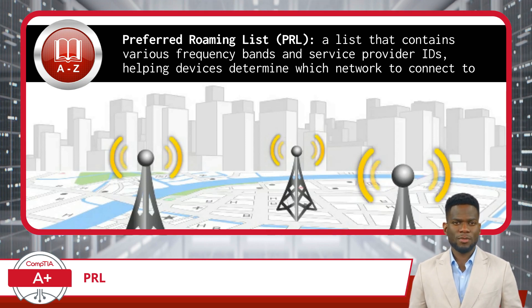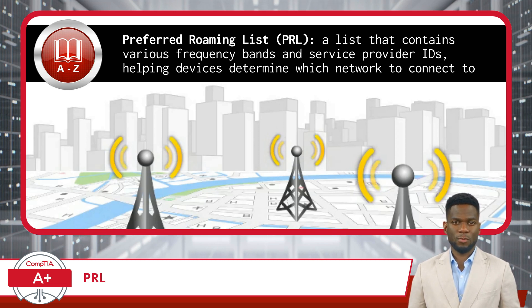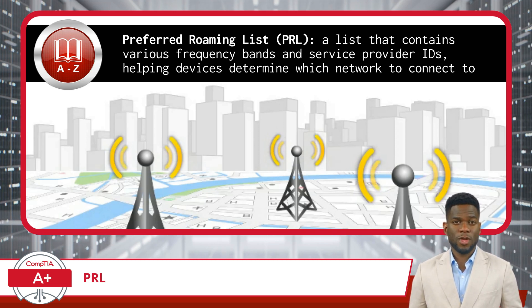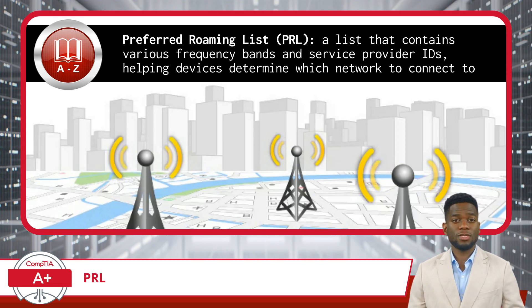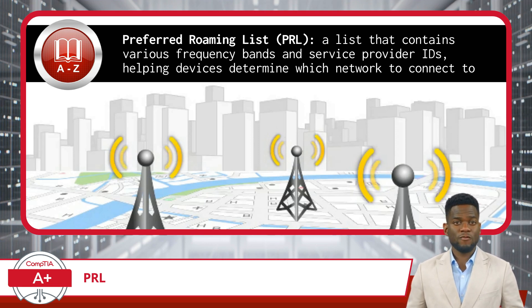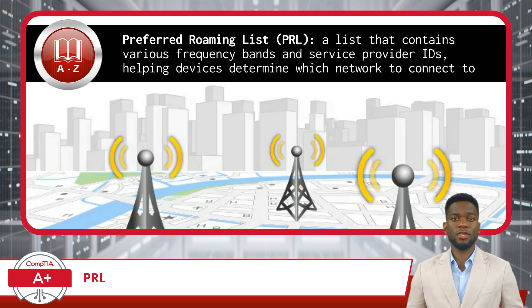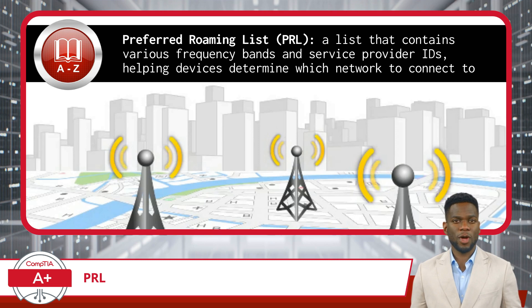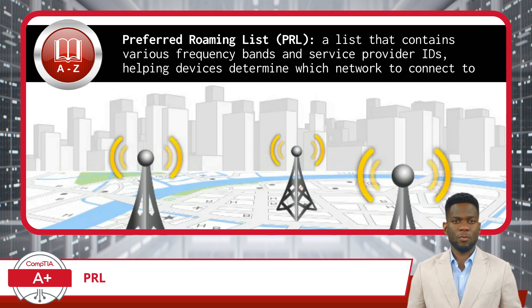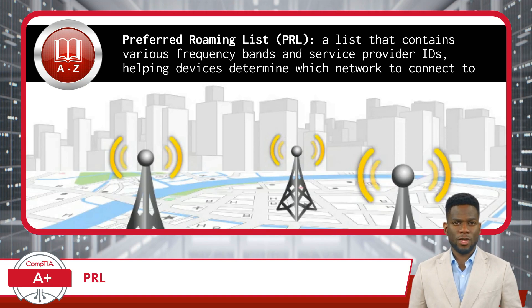How does the PRL work? When you turn on your device, it checks the PRL to find which towers it should connect to for the best signal. This process is automatic and happens every time the device searches for a signal, ensuring that you are always connected to the preferred network. However, the list is prioritized, so if a top choice isn't available, the device moves down the list until it finds a suitable one.